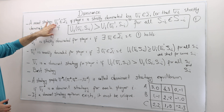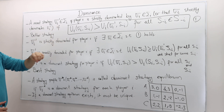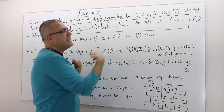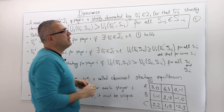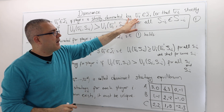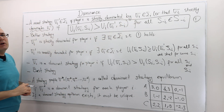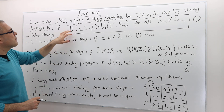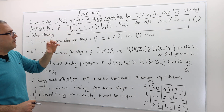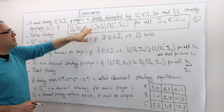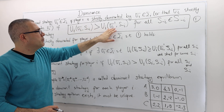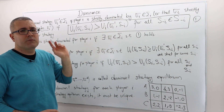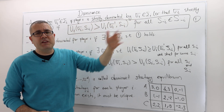A mixed strategy sigma_i_prime of player i is called strictly dominated by another strategy sigma_i — or equivalently, we say sigma_i strictly dominates sigma_i_prime — if and only if player i's payoff when he plays sigma_i is strictly higher than his payoff if he plays sigma_i_prime, regardless of what his opponents do.